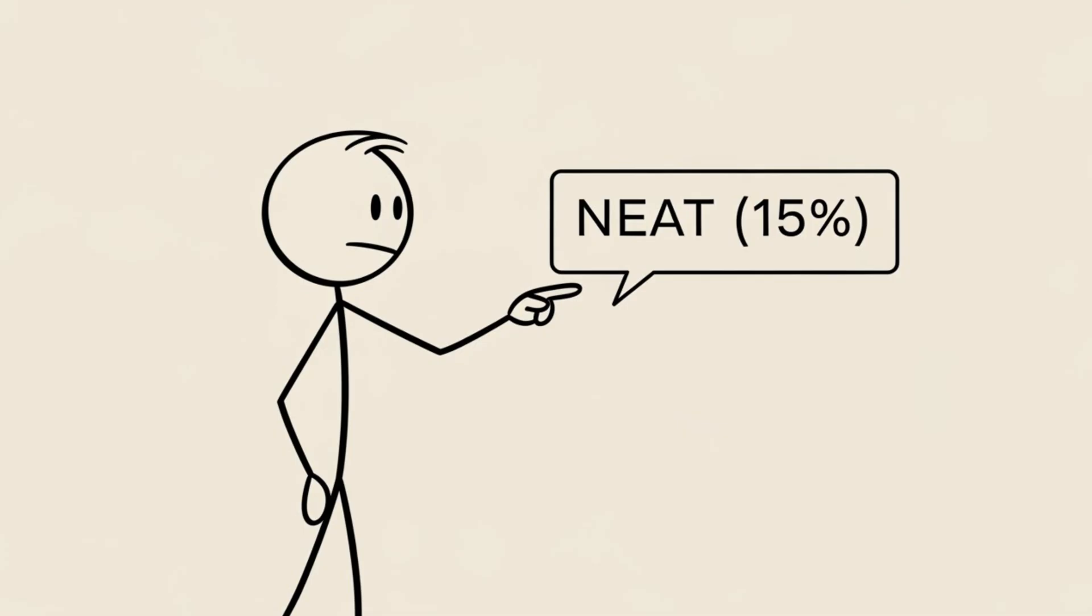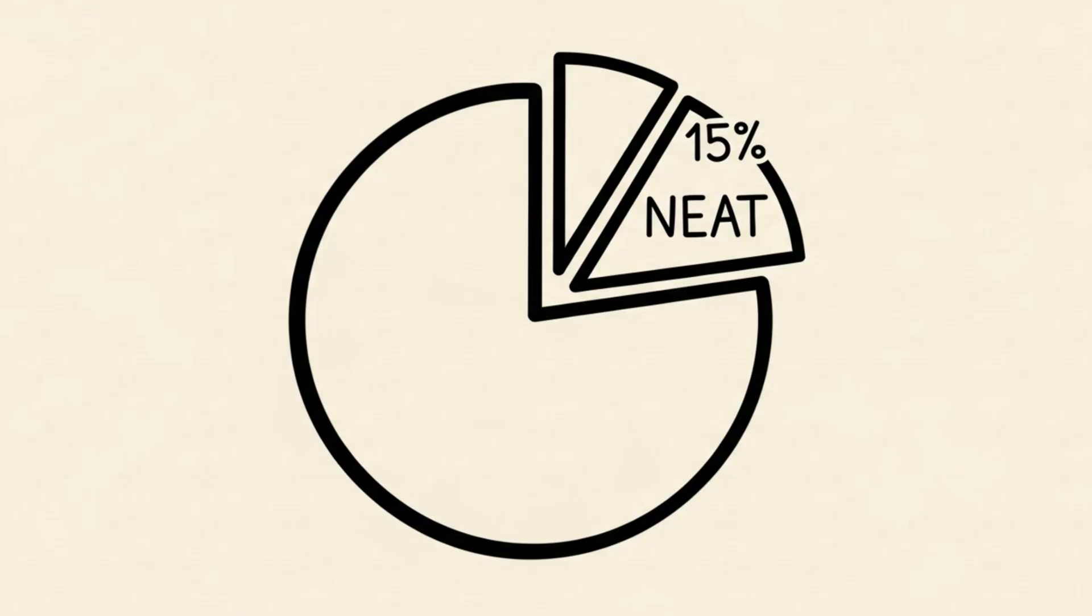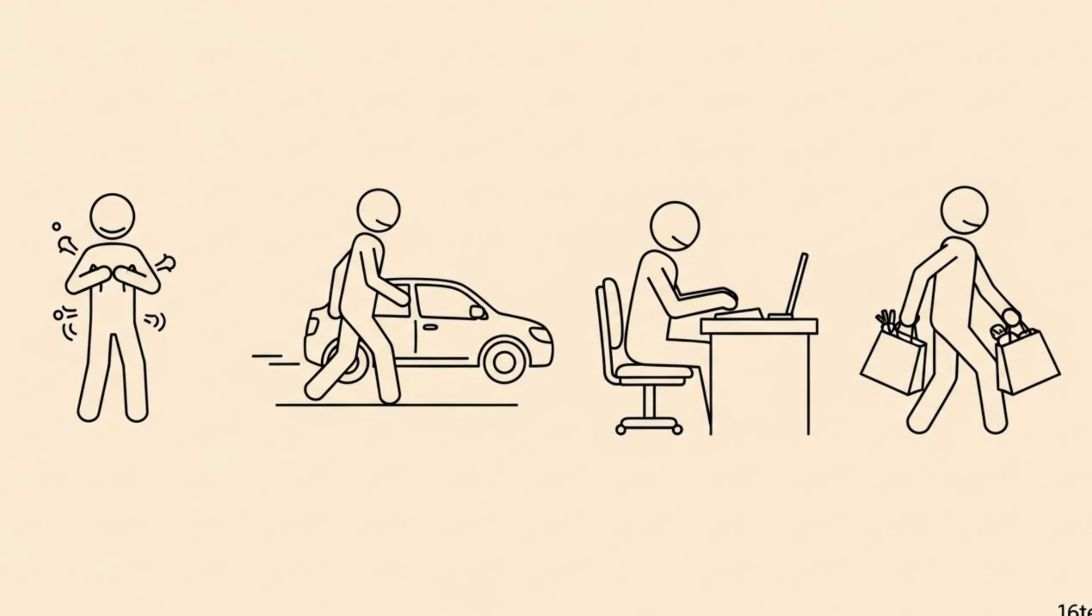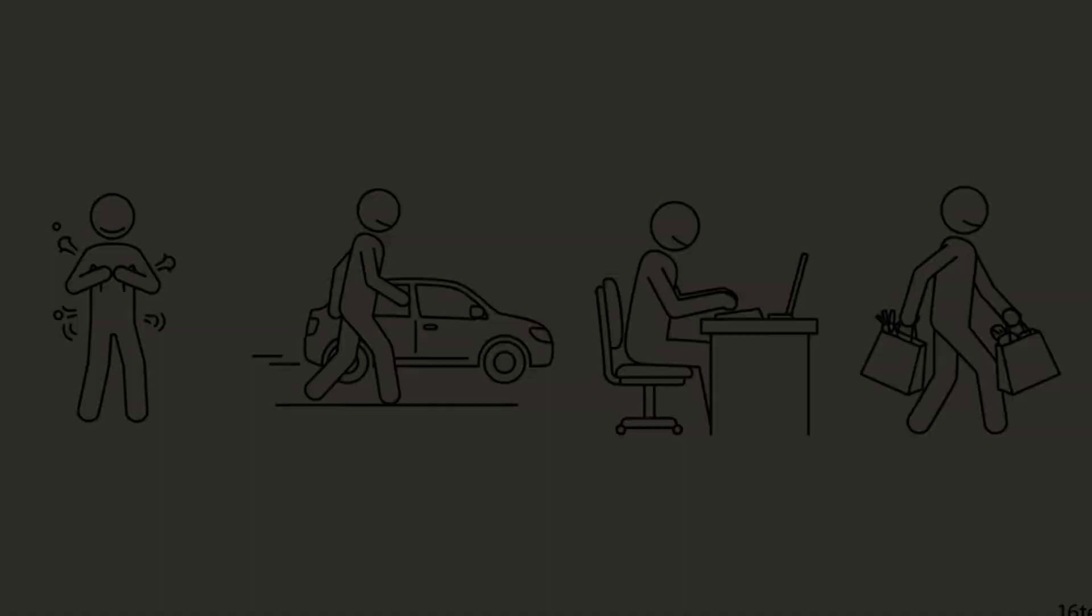Second is NEAT, non-exercise activity thermogenesis. This is about 15% of the pie. This is fidgeting, walking to the car, typing, and carrying groceries. Remember this acronym NEAT, because it is the secret weapon we will come back to later.